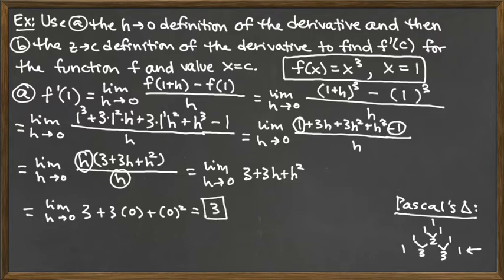That's the answer for the derivative of x cubed evaluated at x equals 1. This was just part A, utilizing the h approaching 0 definition, and we still have part B to go.